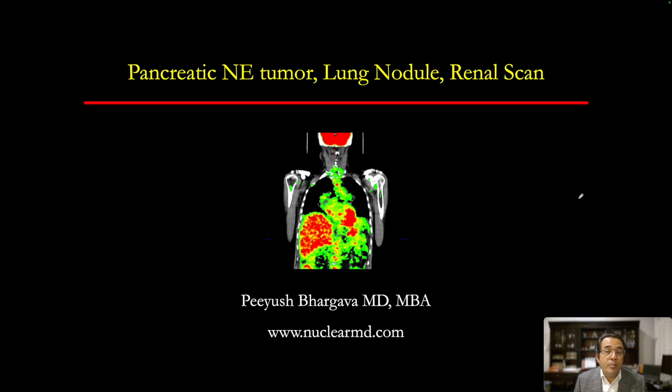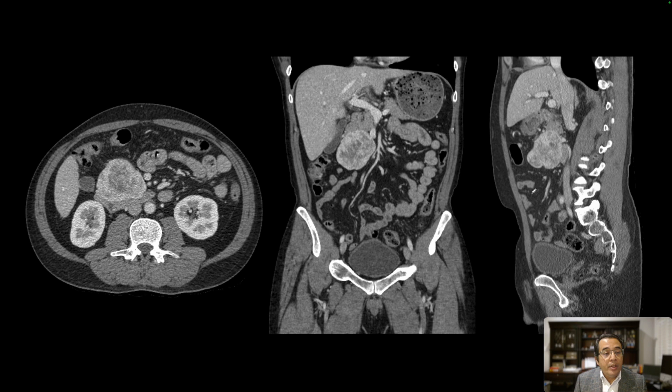Our first patient presented with a mass in the upper abdomen, and this was first evaluated with a CT scan. We see that in the upper abdomen there is this large mass in the region of the duodenum and the pancreas.